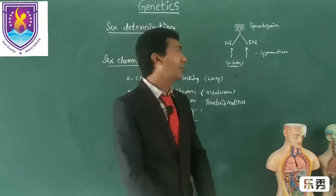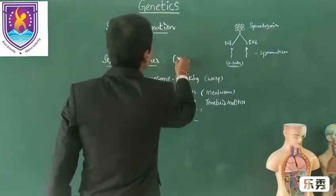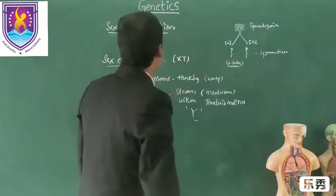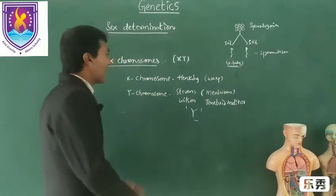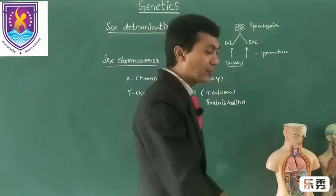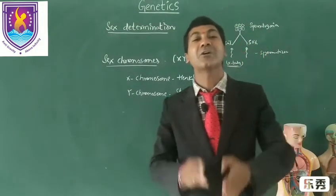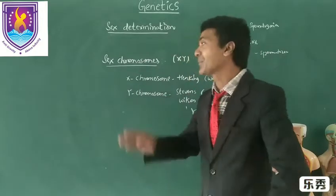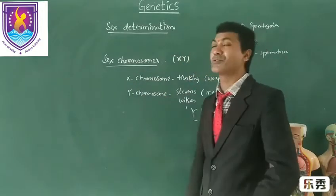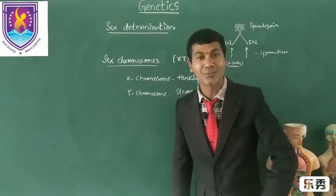So X and Y are generally called sex chromosomes, which are otherwise known as allosomes. Apart from sex chromosomes, the remaining chromosomes are known as autosomes.